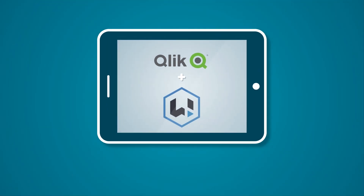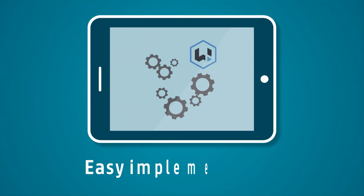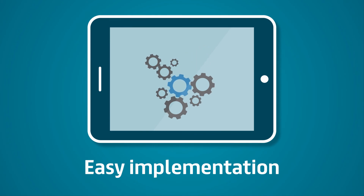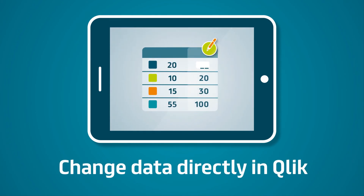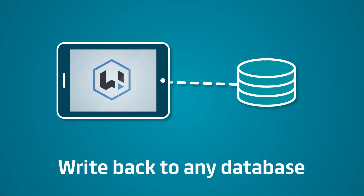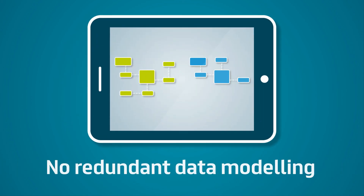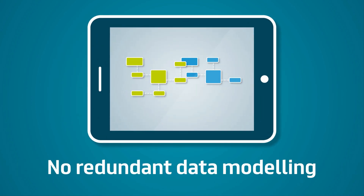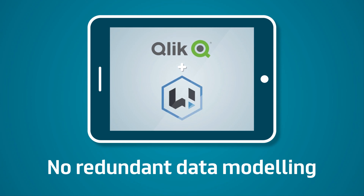Your benefits at a glance: Right is easy to implement. You can edit your data directly in Click. Right enables you to write back to many databases. Skip redundant data models, because Right works with the already existing data model of your Click app.